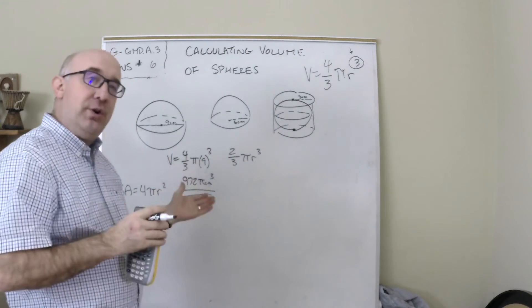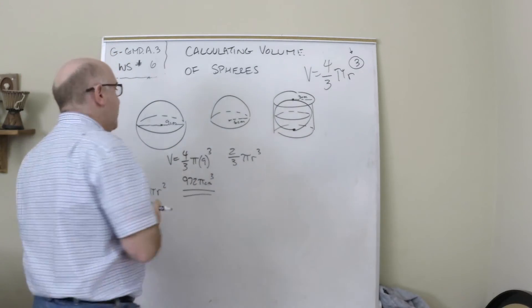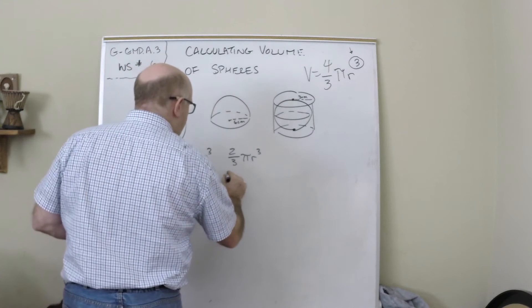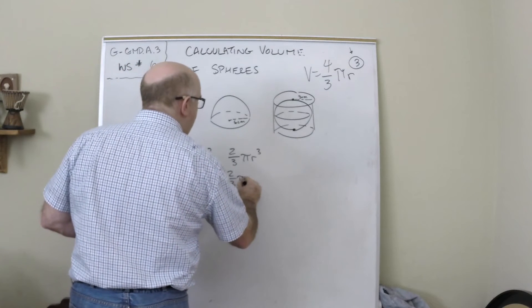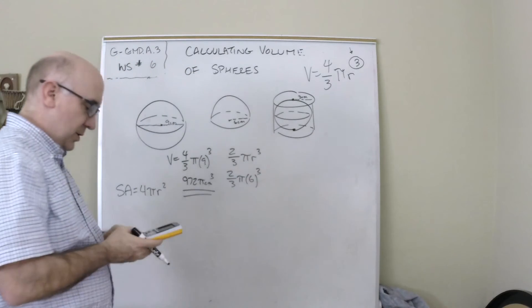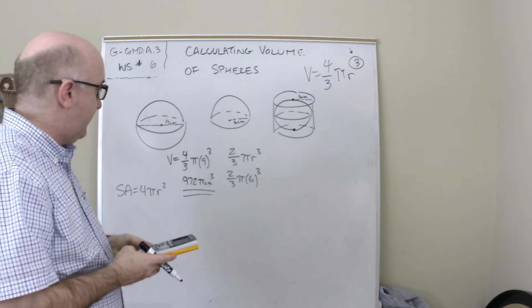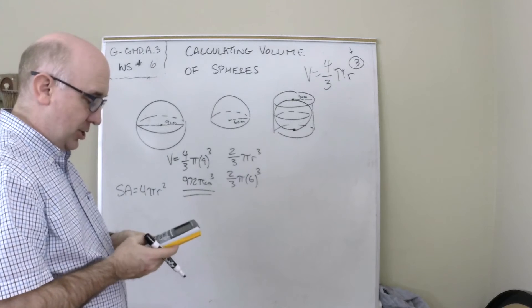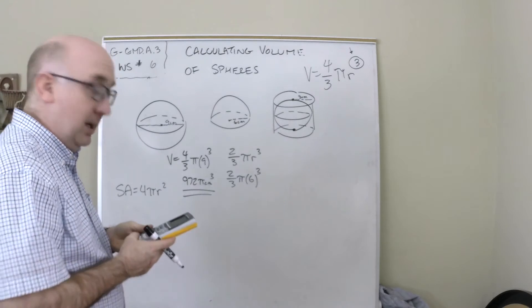So we do two-thirds πr³. We go six to the third power, we multiply by two, we divide by three, and we get 144π centimeters cubed.